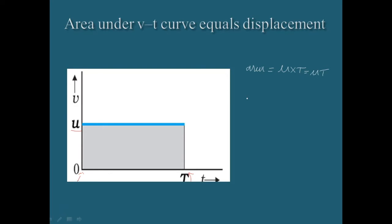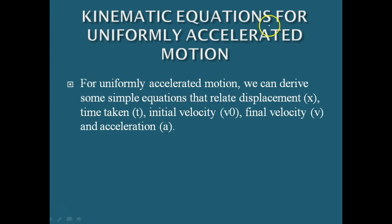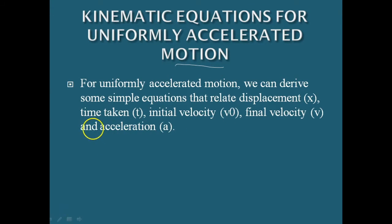You can check the dimensions of the quantities on the two coordinate axes to confirm how the area under this V-T graph gives displacement. Moving to the next part — kinematic equations for uniformly accelerated motion. For uniformly accelerated motion, we can derive equations relating displacement x, time T, initial velocity, final velocity, and acceleration. We already have one relation: v = v₀ + at.